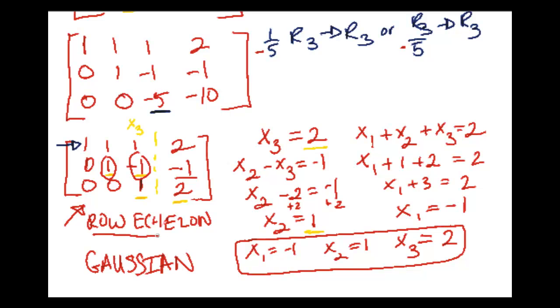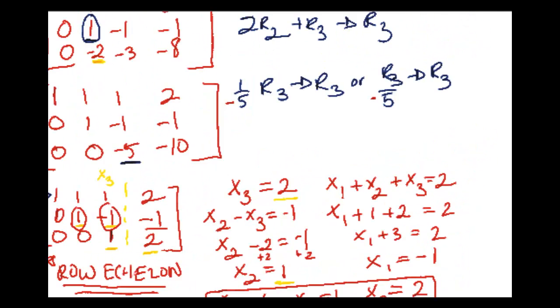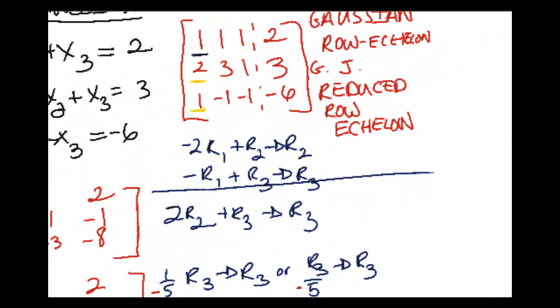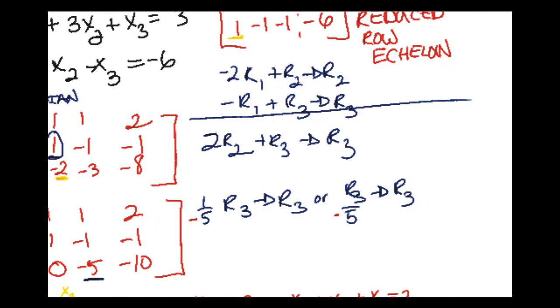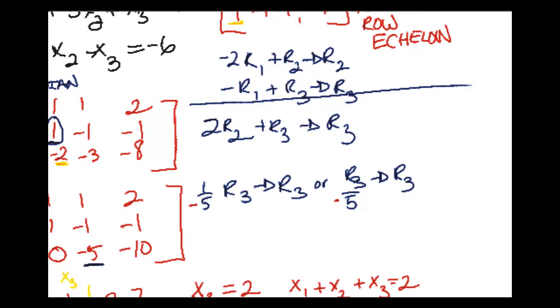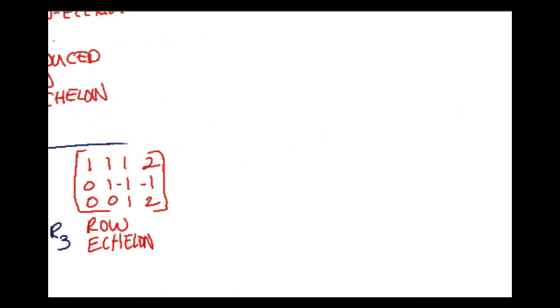So what does that tell you? x1 was -1, x2 was 1, and x3 was 2. And that would be your solution to the system of equations that was written initially. And that was using Gaussian elimination. And that was because we stopped at row echelon. Now let's take a look at the same problem using Gauss-Jordan elimination.